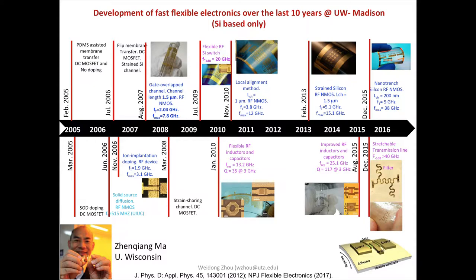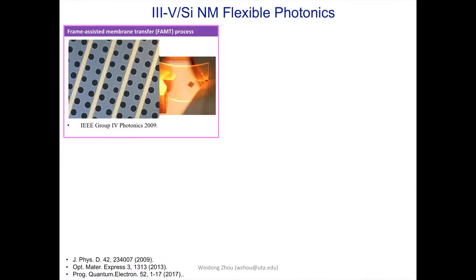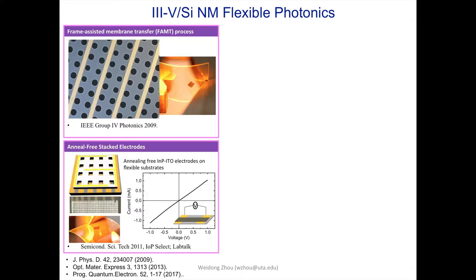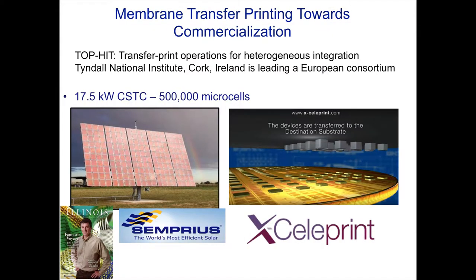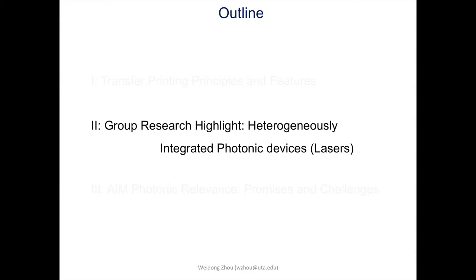A quick slide shows the progress made by Professor Jack Ma at Wisconsin on speed improvement in flexible electronics — from below gigahertz up to tens of gigahertz for flexible electronics. On the commercialization side, John Rogers has started two companies, Semprius and X-Celeprint, looking at solar cells, displays, and different processes. You can do parallel pick-and-place for a large number of devices, with alignment accuracy now around 1.5 microns.